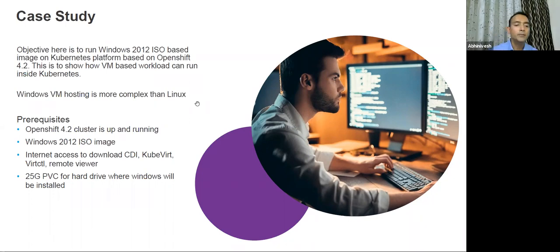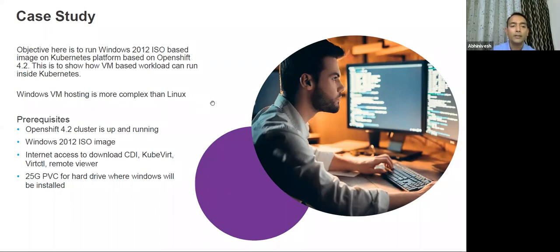The prerequisites are: a Kubernetes cluster up and running (OpenShift, OKD, or vanilla Kubernetes), the ISO image you are going to use, internet access to download a few components and binaries, and sufficient disk space for holding the Windows image.